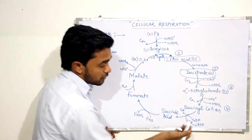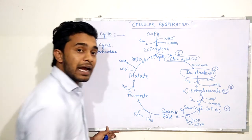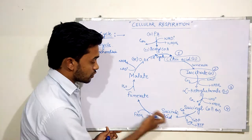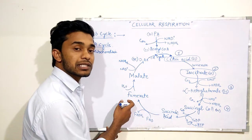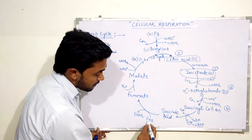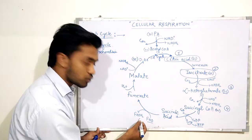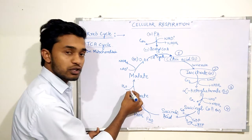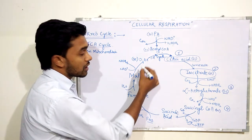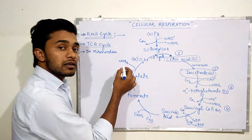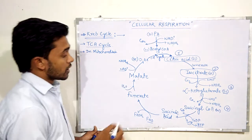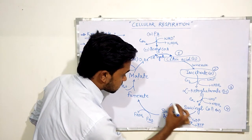In step four, succinyl coenzyme A is converted to succinic acid. In this step, energy is released and used by GDP to produce GTP, which is indirectly converted to ATP. Succinic acid is then converted to fumarate in step five — this is a redox reaction but the compound reduced here is FAD, which is reduced to FADH2. Fumarate is then converted to malate by the addition of a water molecule.